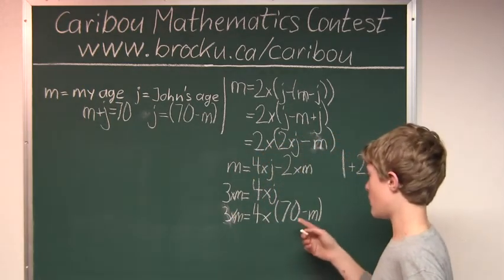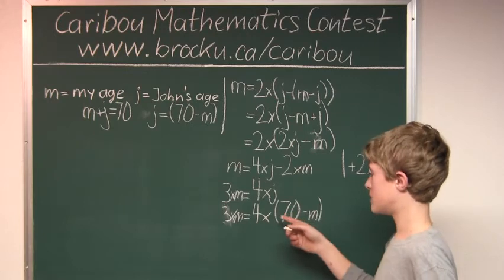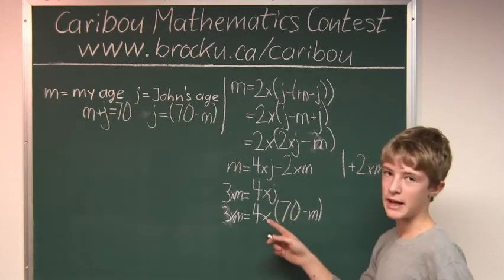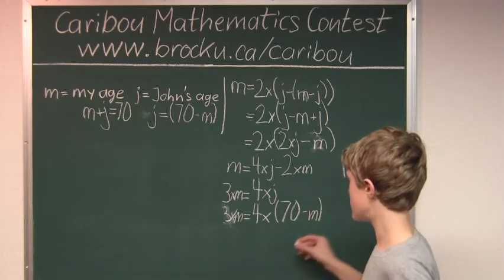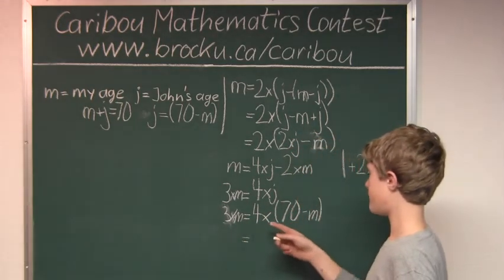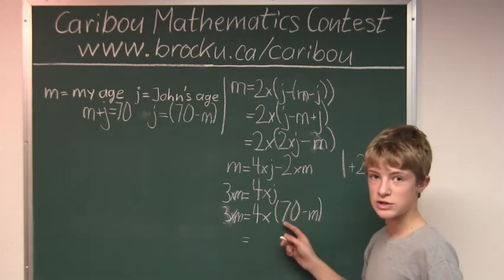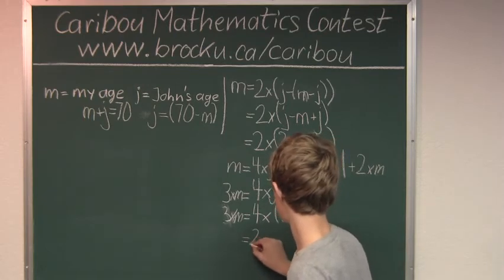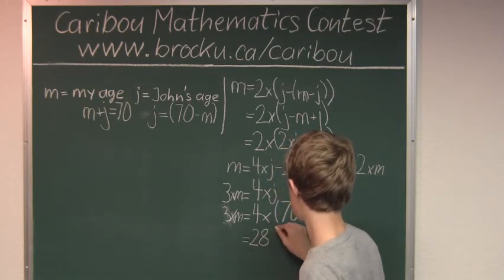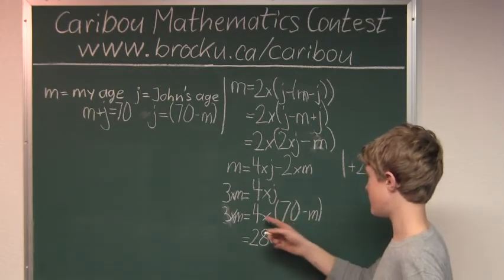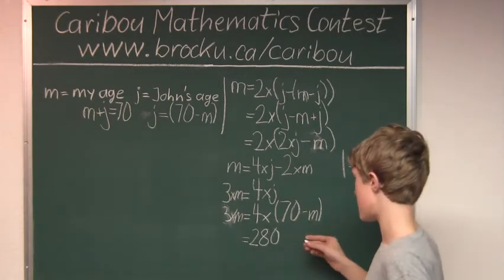Now, we would do what we did before, because if we have a factor in front of a bracket, then we multiply that to each term. So, that would be 4 times 70, which is 280, and then here, we have minus 4 times m.